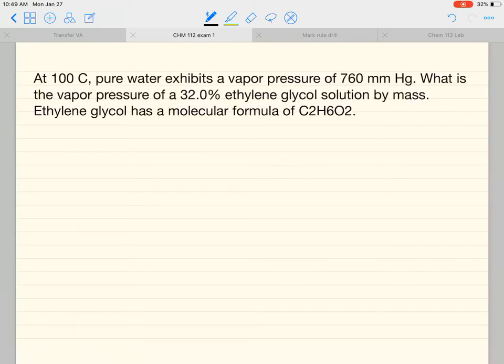Okay, here we have a problem where we're asked to calculate the vapor pressure of a solution. This solution has two things in it. 32% of it is ethylene glycol. Ethylene glycol has a formula C2H6O2.